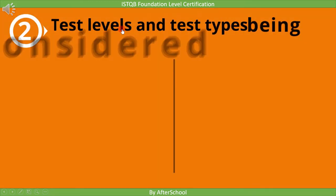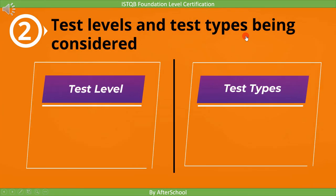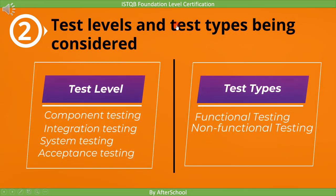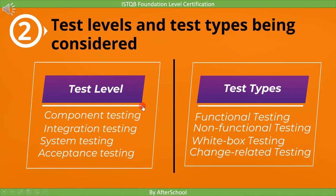The second context is the test level and test type being considered. Based on test level and test type, the test process is selected. The four test levels covered in this course are: component testing, integration testing, system testing, and acceptance testing. The different test types are functional test types, non-functional test types, white box testing, and change-related testing. Each of these will be covered in upcoming lectures. The second context is test level and test type.